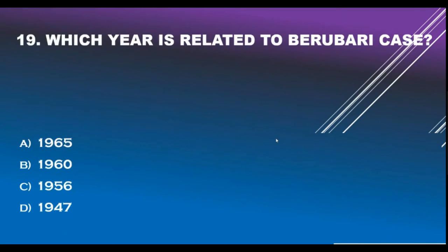Question number 19. Which year is related to the Berubari case? Option A - 1965. Option B - 1960. Option C - 1956. Option D - 1947. Correct answer: 1960.